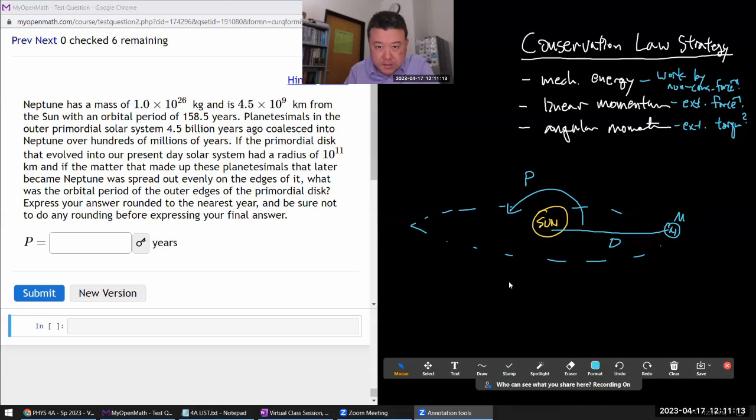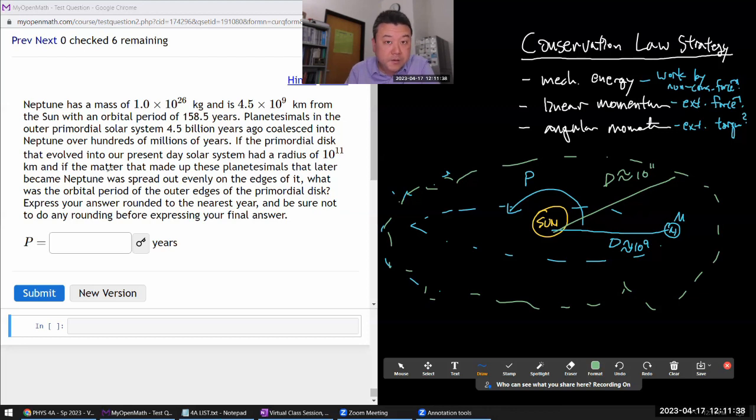So they gave us a distance that's on the order of 10 to the 9 kilometers, and they are saying all this stuff comes from kind of stuff that was around the sun at even farther distance, at a distance of about 10 to the 11 kilometers. They make things simpler - we don't have to worry about matter distributed at kind of overall range of radii.